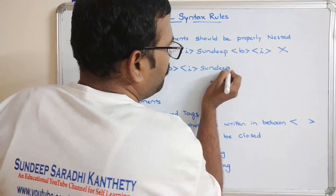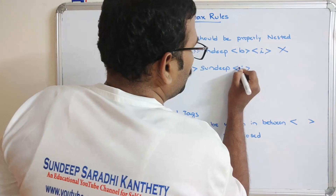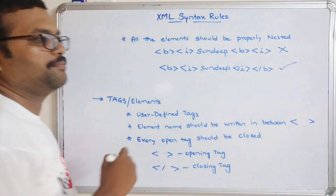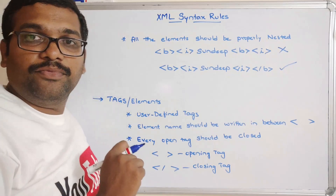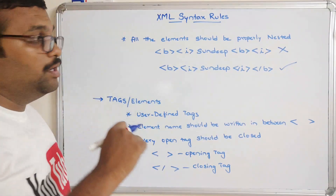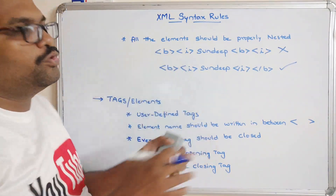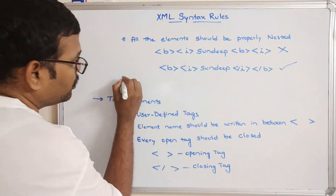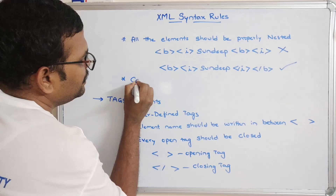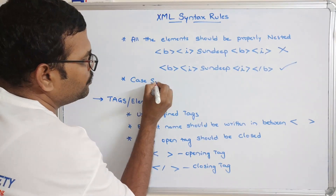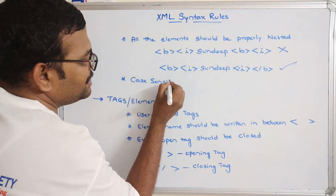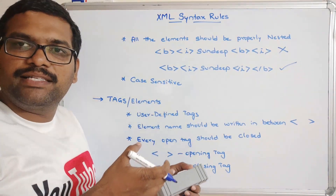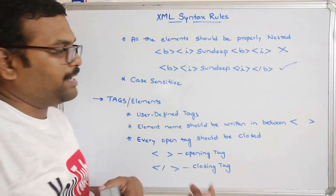The correct approach is to close the inner tag first, then close the outer bold tag — that is the right answer. So the tags should be nested properly. One more thing: XML is case sensitive. Case sensitive means there is a difference between lower case characters and upper case characters.